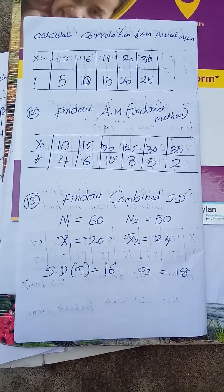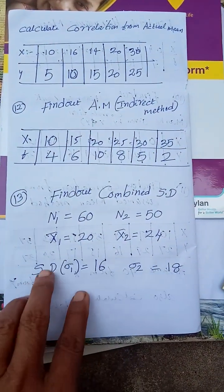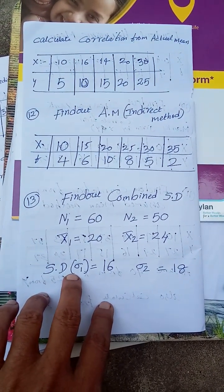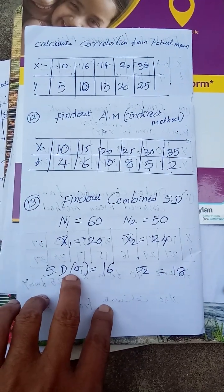You will change the problem on standard deviation. If standard deviation is given and you need variance, variance is the square of standard deviation. When variance is given, the square root of variance equals standard deviation.